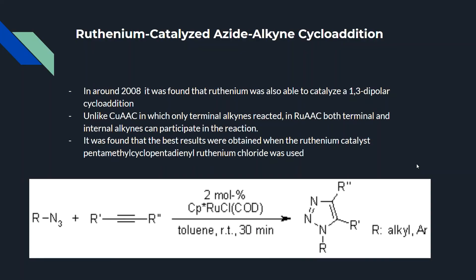The ruthenium-catalyzed azide-alkyne cycloaddition: in around 2008, it was found that ruthenium was also able to catalyze a 1,3-dipolar cycloaddition. Unlike the copper catalyst, in which only terminal alkynes reacted, in the ruthenium catalyst both terminal and internal alkynes were able to participate in the reaction. The best results were found when the ruthenium catalyst pentamethylcyclopentadienyl ruthenium chloride was used.